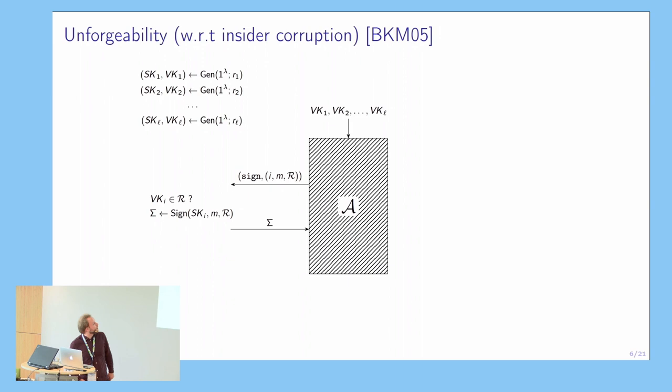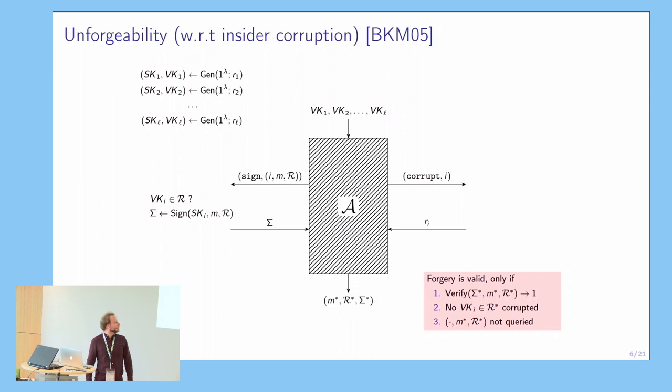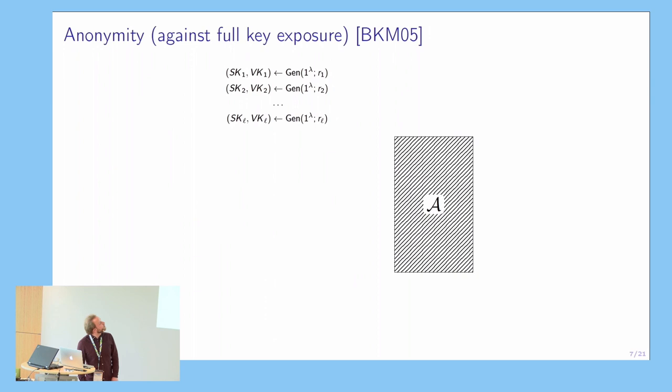Notice that this ring may also contain maliciously generated keys by the adversary. It can also ask to corrupt one of these keys, in which case we provide the randomness used to generate the key to the adversary. In the end the adversary will output a forgery attempt, and we say this forgery is valid if the ring signature is valid, none of the keys in the forgery ring were corrupted, and the signature also didn't come out of the signing oracle.